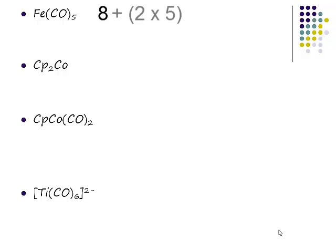So cobalt, what group in the periodic table is cobalt in? Nine. Very good. So cobalt is in group nine. A CP ligand is a how-many electron donor? Five. So we have a CP ligand. How many of those do we have? 2 × 5 + 9 = 19.